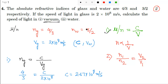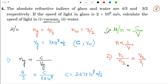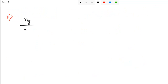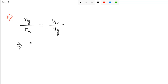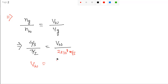Now moving to the second part — calculate the speed of light in water. Using the formula: ng / nw = vw / vg. Substituting: (4/3) / (3/2) = vw / (2×10⁸). So vw = 2×10⁸ × (4/3) × (2/3) = 2×10⁸ × 8/9, which gives 16/9 into...